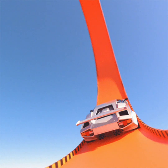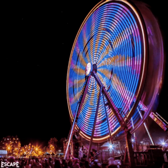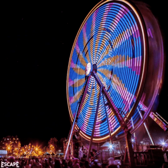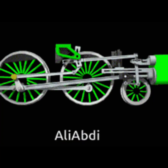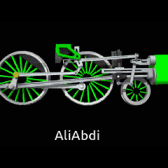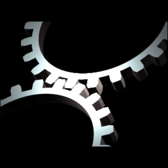Assalamu alaikum viewers, and welcome back to my channel Dibna's Colverse. Wheels are one of the most fundamental inventions in human history, revolutionizing transportation, machinery, and industry. While the concept of a wheel may seem simple, its designs and functions vary greatly depending on its purpose. From the ancient wooden wheels of carts to the modern high-tech wheels of vehicles, these circular devices come in various forms, each tailored to specific needs. Let's explore the different types of wheels and how they serve various functions in our daily lives.